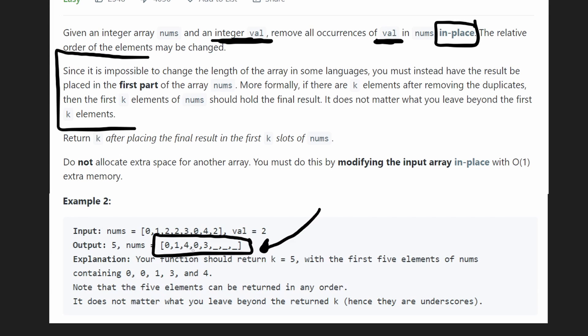The relative order, as you can see, does not actually matter. Like four, zero, three is not the order that they appeared in the input array. In the input array, they were given as three, zero, four. So it doesn't matter what order we do it, but we have to put all the values that are not two at the beginning of the array. But this array, this output array, is not what we're actually returning.